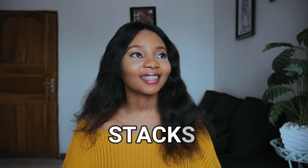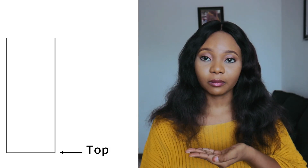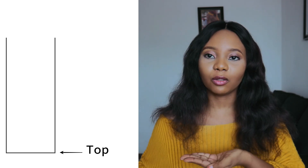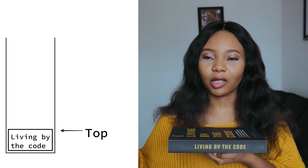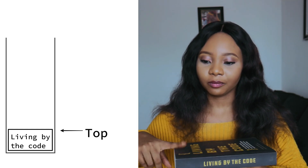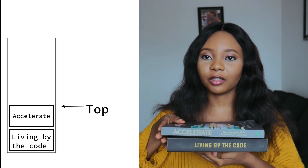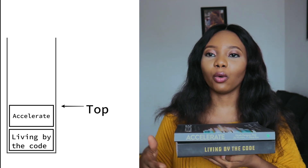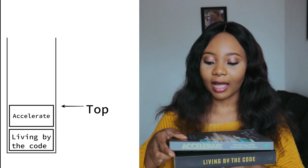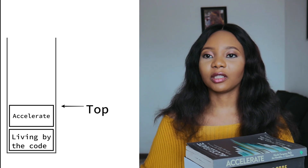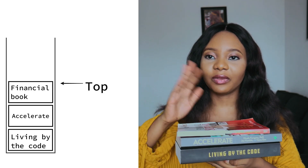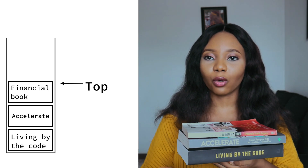The next data structure is a stack, which is the last-in, first-out data structure. I have books here to demonstrate. My hand is the stack — I declare the stack, it's empty. I push 'Leaving by the Code' onto that stack, and now it's at the top. Then I push 'Accelerate' onto the stack, and now that's the new top — there's no way to remove 'Leaving by the Code' without removing 'Accelerate' first. Then I add a financial survival book onto my stack, and that becomes the new top. There's no way to remove 'Accelerate' or 'Leaving by the Code' without removing this one first.